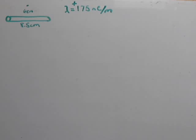Part A is asking: find the magnitude and direction of the electric field this wire produces at a point 6 centimeters directly above its midpoint.